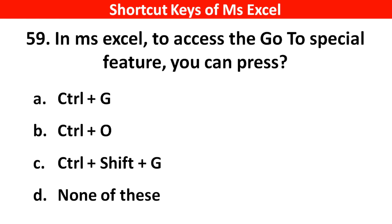In MS Access, to access the Go To Specials feature, you can press — right answer is option A: Ctrl plus G.